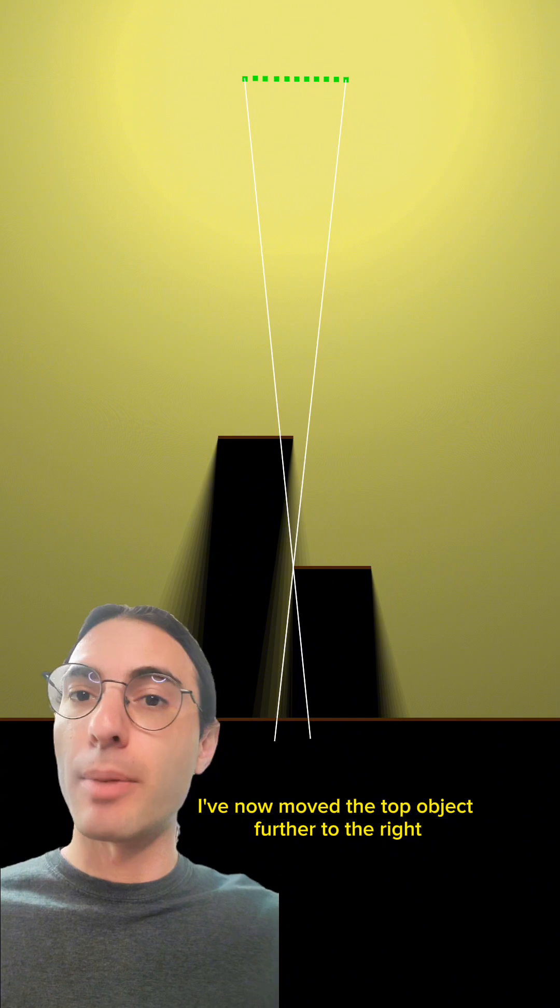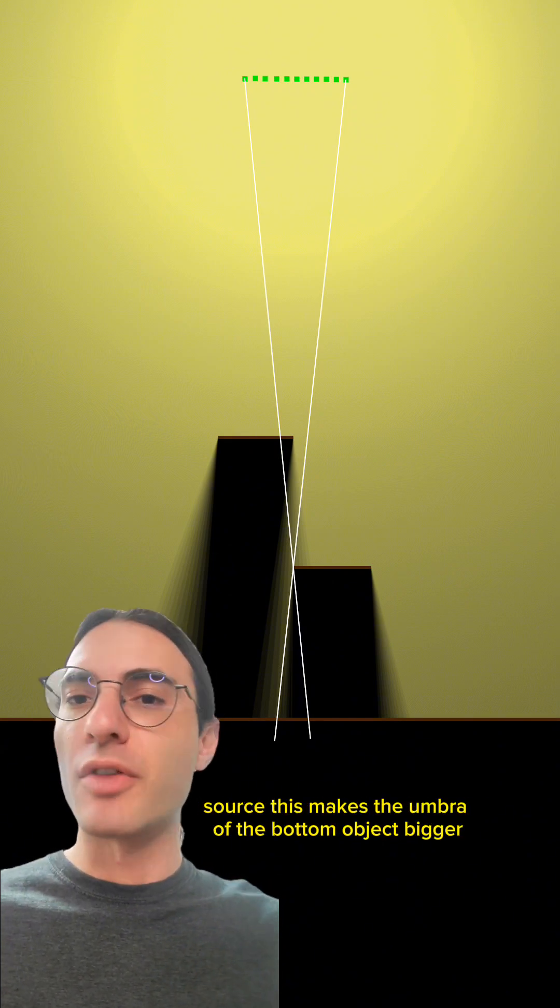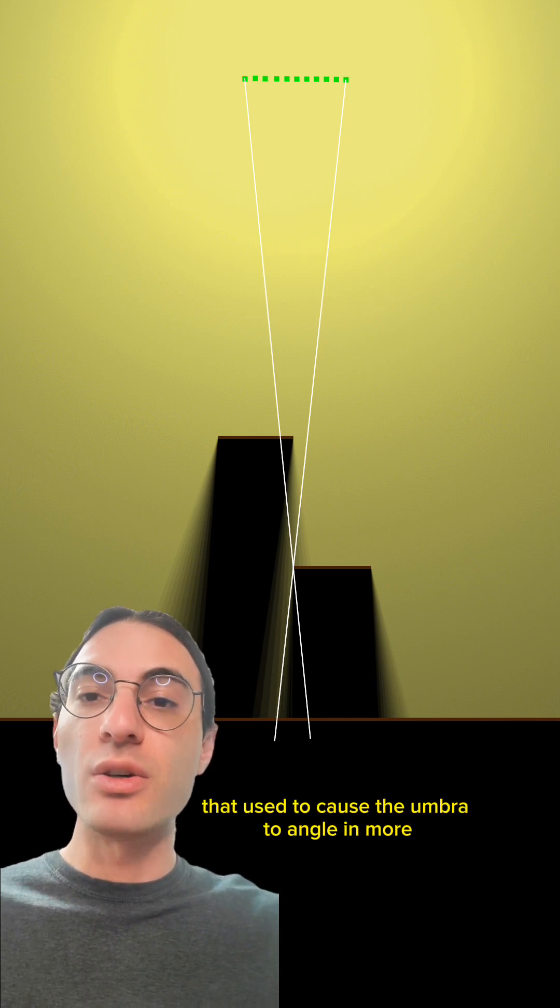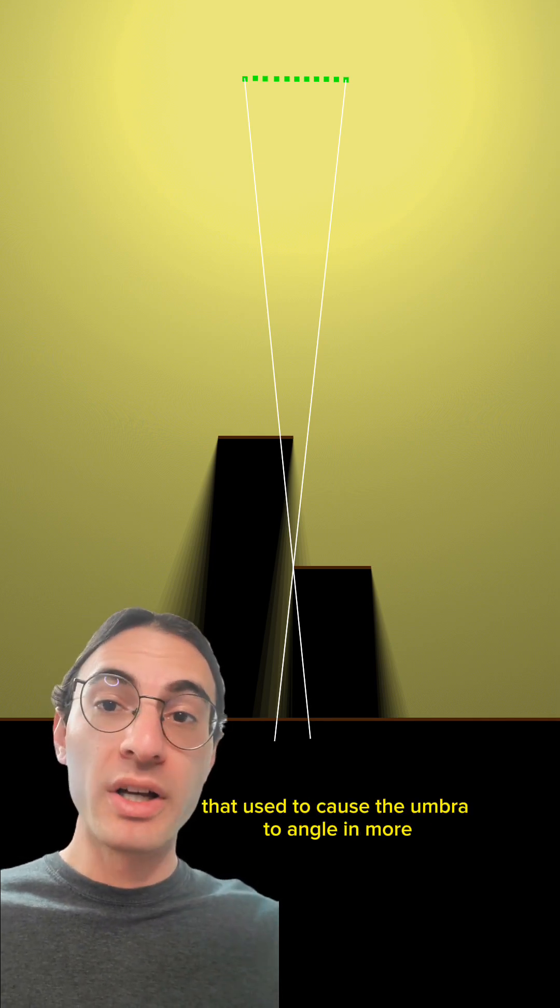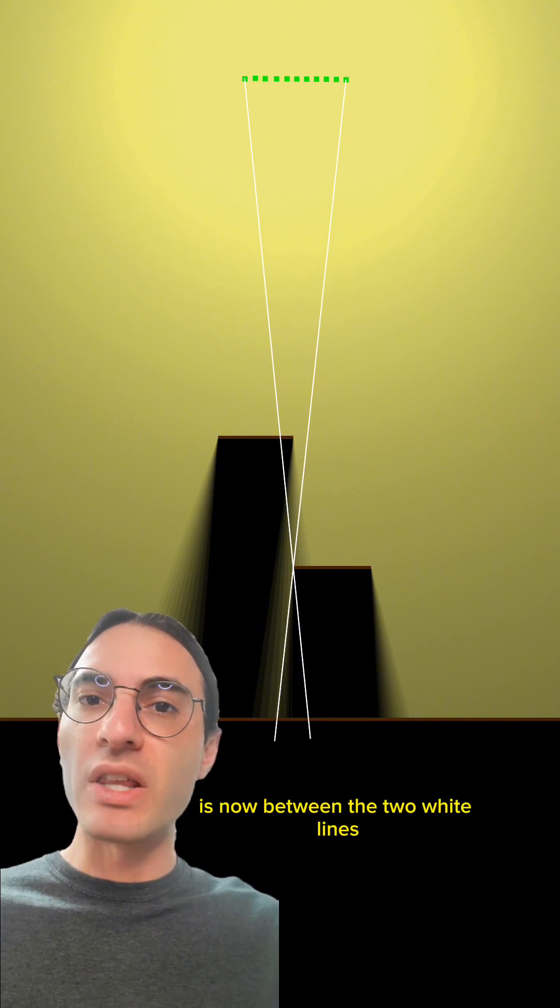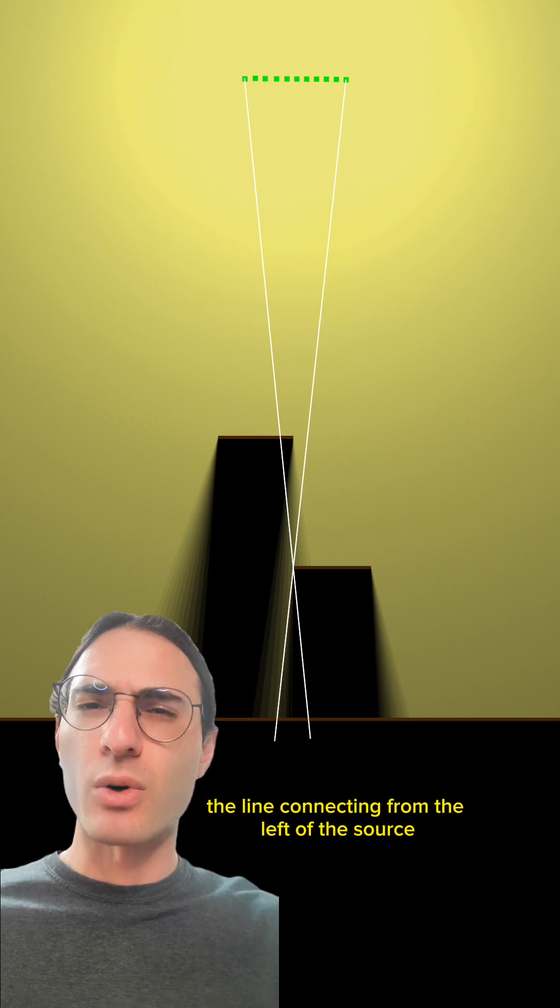I've now moved the top object further to the right, blocking some of the light from the left side of the light source. This makes the umbra of the bottom object bigger because there's less light coming in at that shallow angle that used to cause the umbra to angle in more. Notice how the umbra, the dark shadow, of the bottom object is now between the two white lines rather than aligning with the right-most edge of the line connecting from the left of the source?